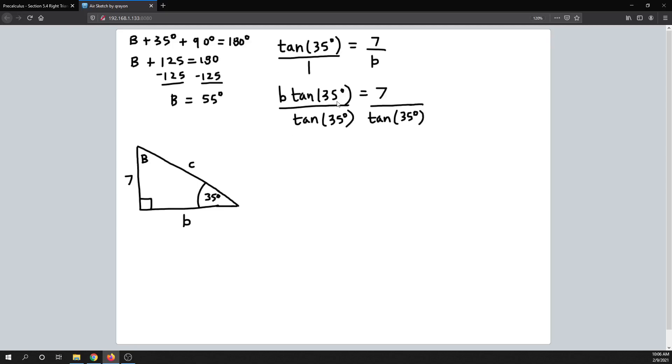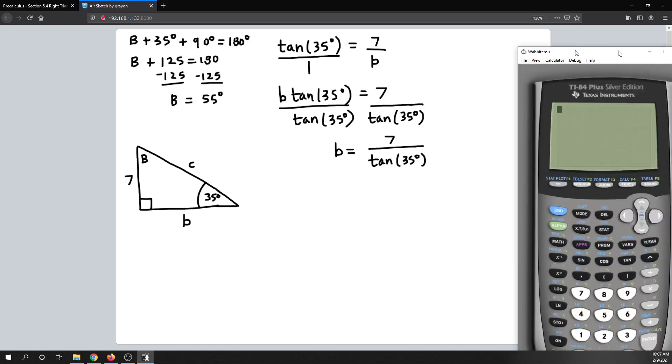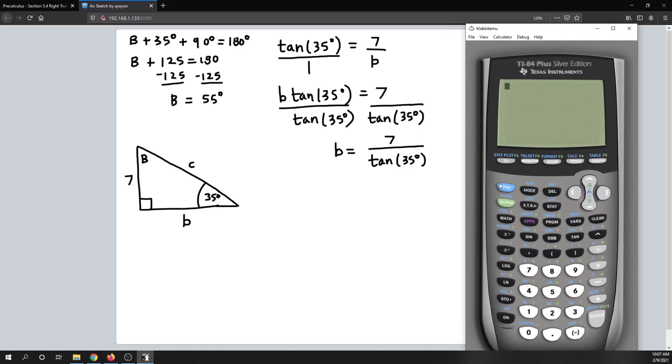And the tangent of 35 degrees are going to cancel each other out. So I'm going to be left with b equals 7 divided by the tangent of 35 degrees. All right, so next up, what I would do is go to the calculator and determine what 7 divided by the tangent of 35 degrees is going to be. So let me pull up the calculator. Okay, so that would be, again, making sure that I'm in degree mode. All right, I'm in degree mode, so that's good. So I would do 7 divided by the tan of 35 degrees.